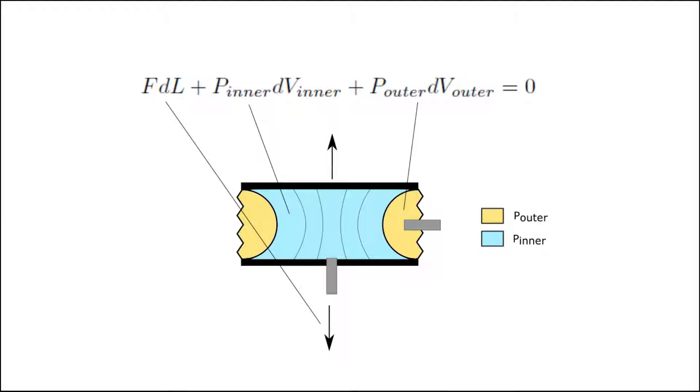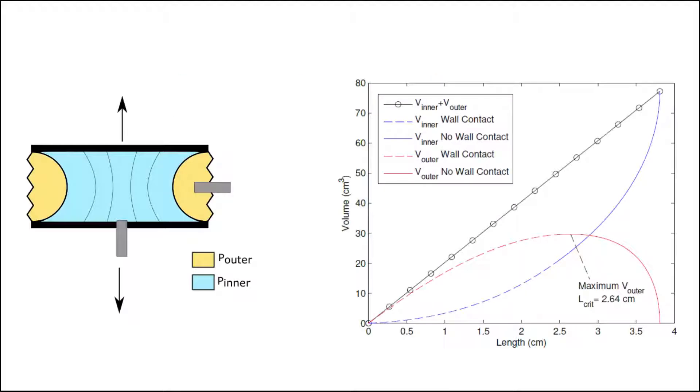Computing the work done by the pressure chambers requires computing how the volume of the inner and outer chambers change with actuator length. We analyze the membrane shape and compute the volumes of the inner and outer chambers, as shown in this plot.